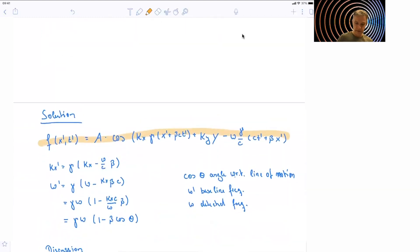And so we want to identify the individual terms kx', or we label kx' as the parameter we find here in the solution, in this Lorentz transformed solution. And we do the same for omega prime.